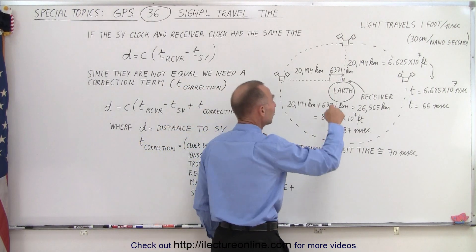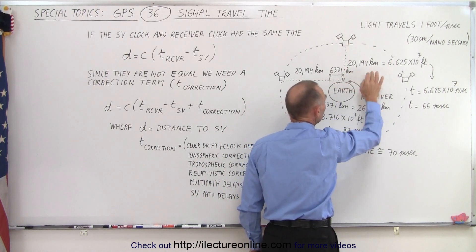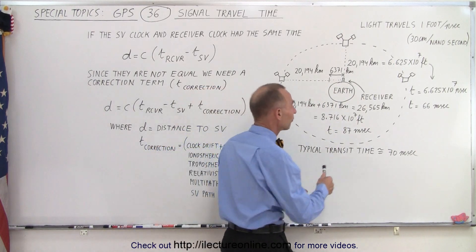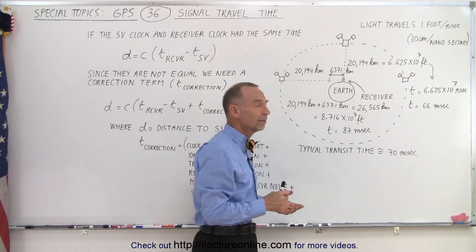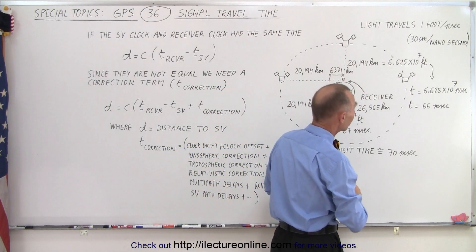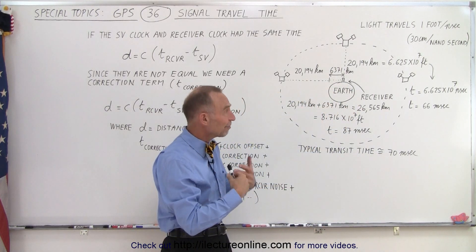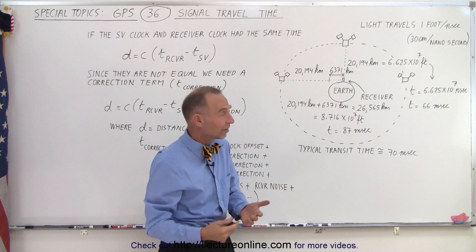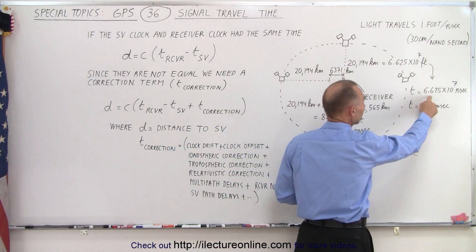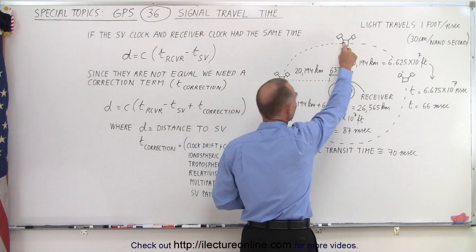Let's say that an SV is directly overhead. That means the distance between the SV and the receiver would be about 20,194 kilometers. Converted to feet that's about 66 million feet. We know that light travels one foot per nanosecond or about 30 centimeters per nanosecond. So however many feet we have, that's the number of nanoseconds it takes to travel that distance. Therefore it takes about 66 million nanoseconds or about 66 milliseconds if the SV is directly overhead.